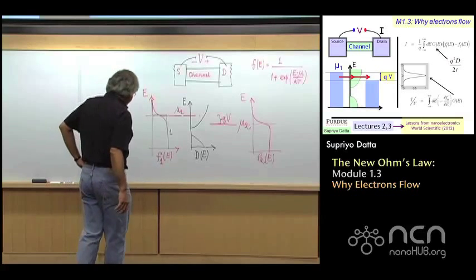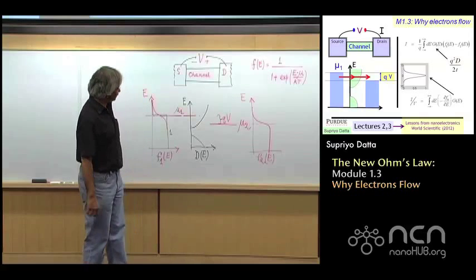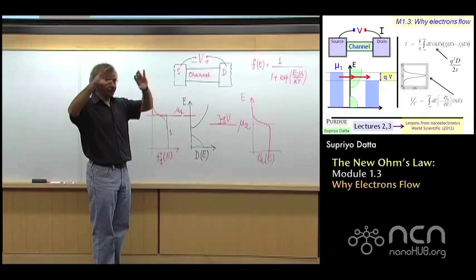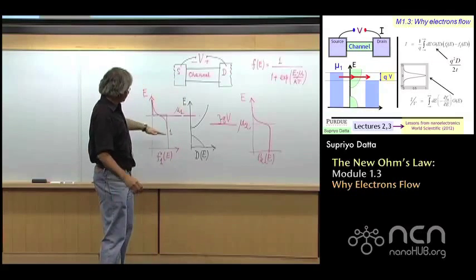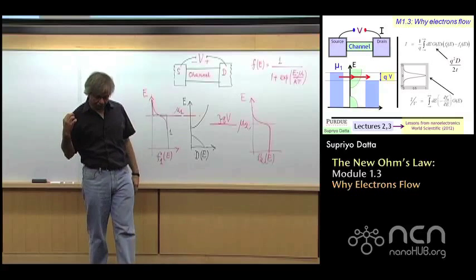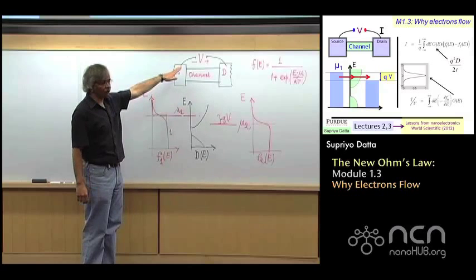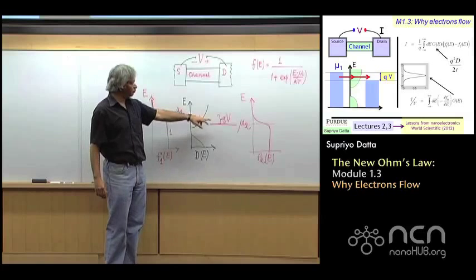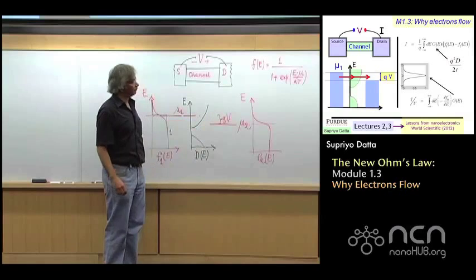It will be based on this picture that we developed in the last module, namely, you have a density of states and you have these two big contacts, these reservoirs with lots of states filled with electrons up to a certain level. And that level is this Fermi level or the electrochemical potential denoted by mu. And when you put a voltage across it, the two levels separate by an amount equal to qv, q being the charge on an electron and v being the applied voltage.